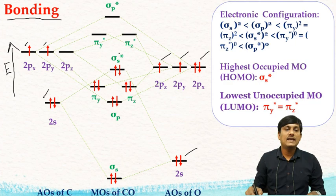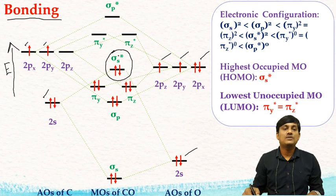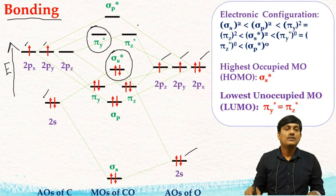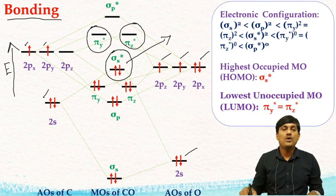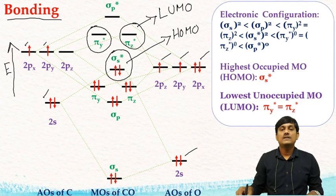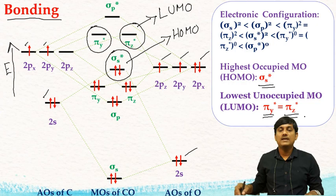The highest energy level filled with electrons is called the HOMO — highest occupied molecular orbital — which is σ*s. The levels unfilled with lowest energy are the LUMO — lowest unoccupied molecular orbital — which are π*y and π*z.